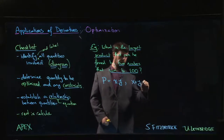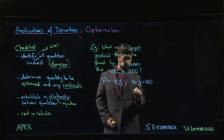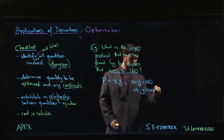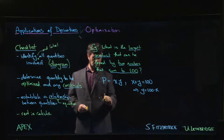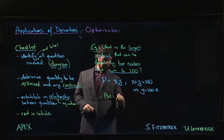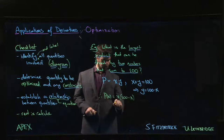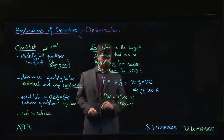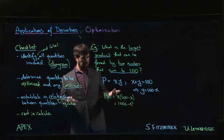Since x + y = 100, we can write y = 100 − x. Now we have a function of x: P(x) = x(100 − x) = 100x − x². That's a single-variable function we know how to optimize.